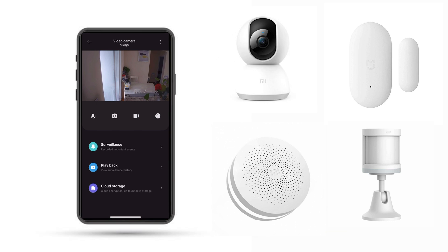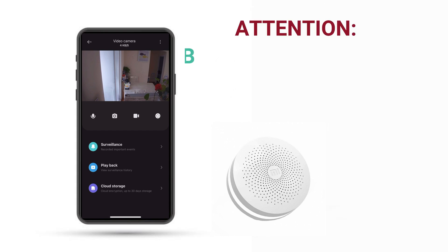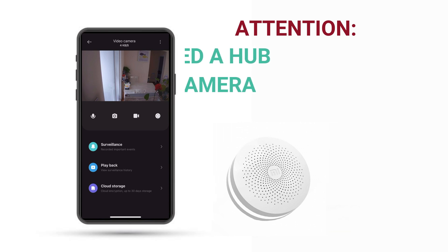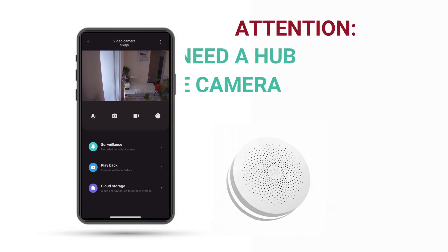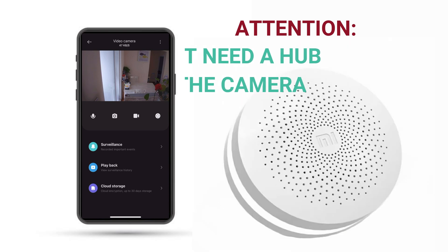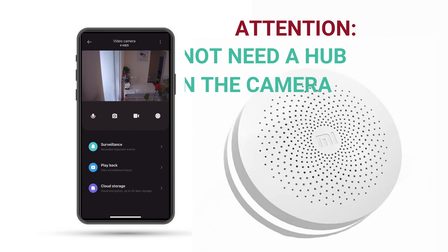Once you have opened the camera, you need to go to the three dots menu, then scroll down to automations.